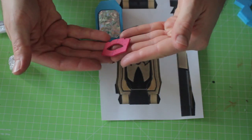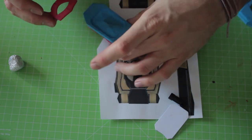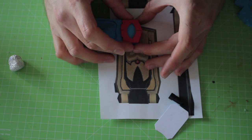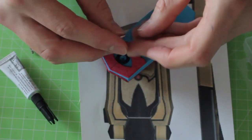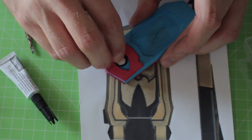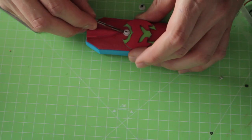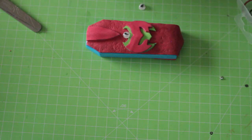I used 2mm craft foam for this element as well. Now flip it around and add a third rubber ring and a googly eye in the area above the Ranger symbol.